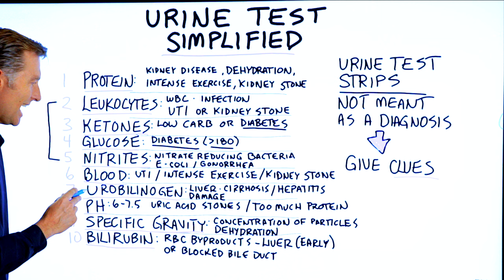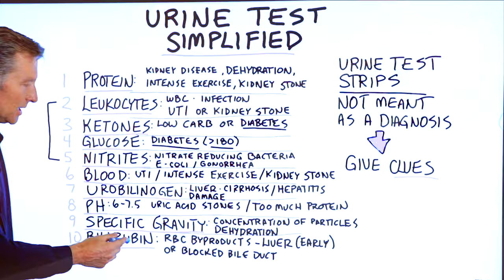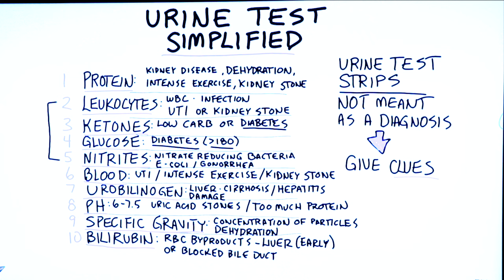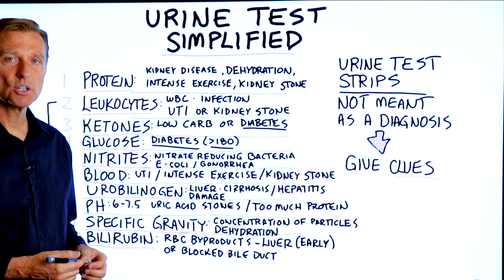Number seven is urobilinogen. That is the breakdown of bilirubin, which is a byproduct of red blood cells when they're broken down. So if there's urobilinogen, that's more of an indication of liver damage. It could potentially be cirrhosis, which is scar tissue of the liver, inflammation of the liver, or any other problem with the liver.